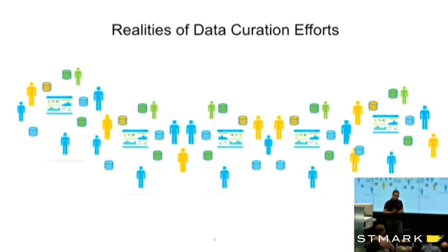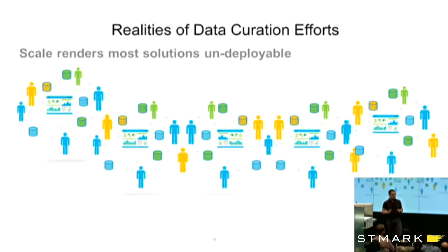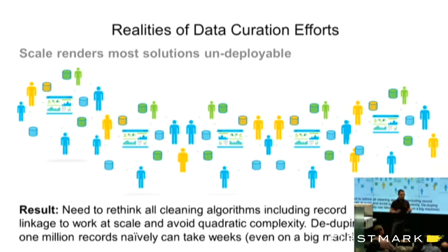The second practical problem is scale, which renders all our solutions impractical. The simplest exercise in data cleaning has quadratic complexity — just comparing all records to each other is super expensive and prohibitive at any real scale. We need to rethink everything to ensure linear or sublinear algorithms are the solution.